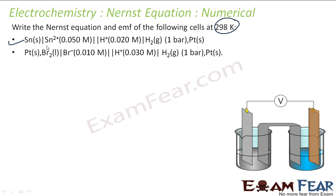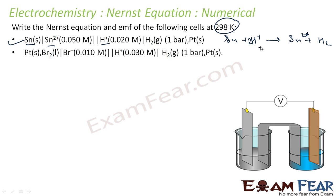For this reaction, Sn becomes Sn²⁺, so we have Sn → Sn²⁺. Then H⁺ is reduced to H₂, so there are two hydrogens, meaning there have to be two H⁺. This is the balanced reaction. Sn is solid, H⁺ is aqueous, and H₂ is gas.